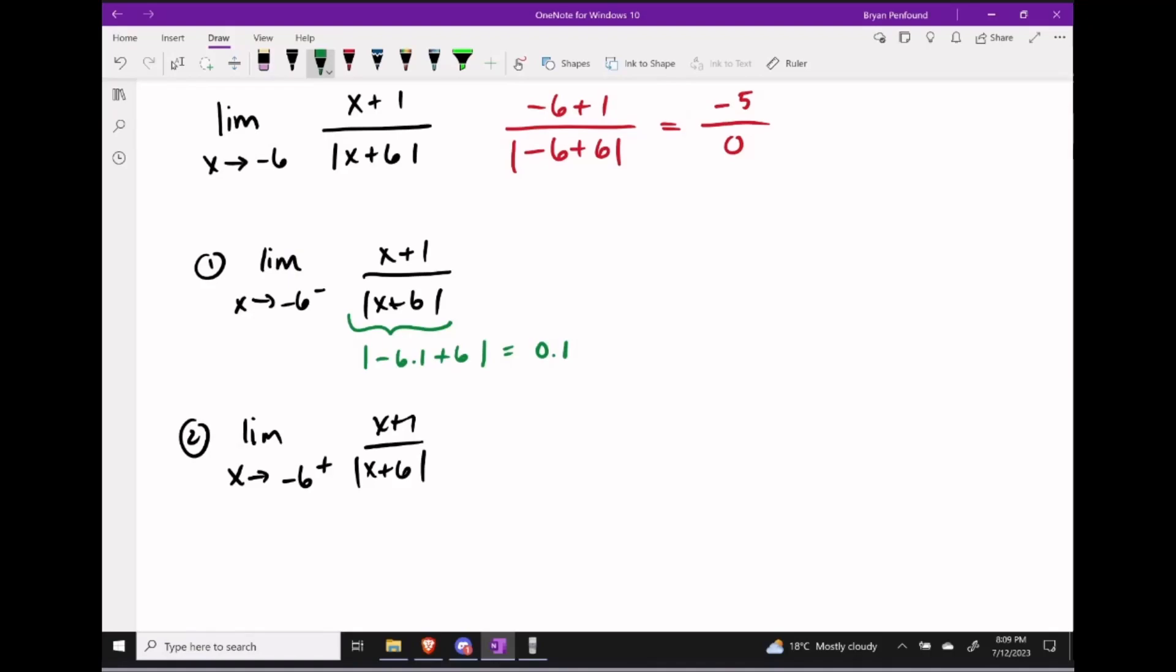Let's take a look logically at what's happening with the denominator, since that's where the issue is in this particular question. If I start to choose values that are a little bit smaller than negative 6, for example negative 6.1, and I do this evaluation, I'm going to get a value that's pretty close to 0. So in this case, 0.1.